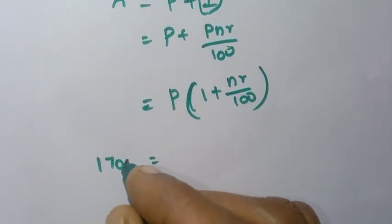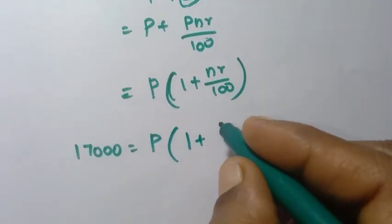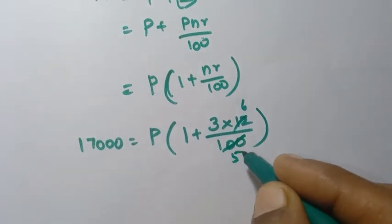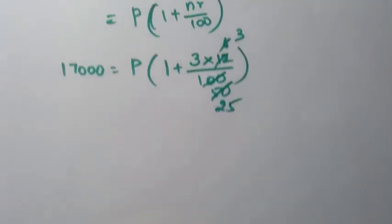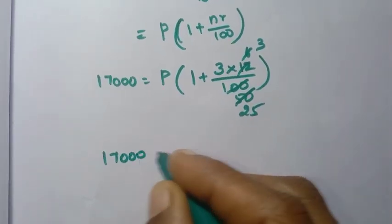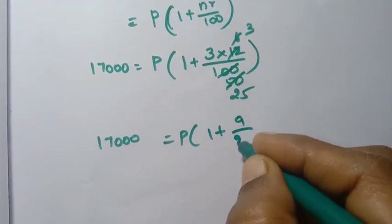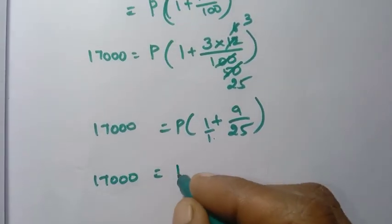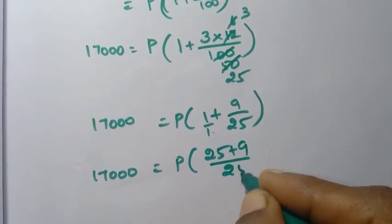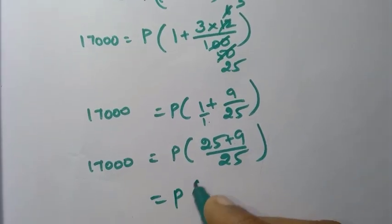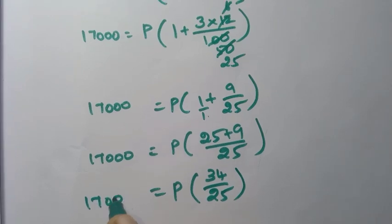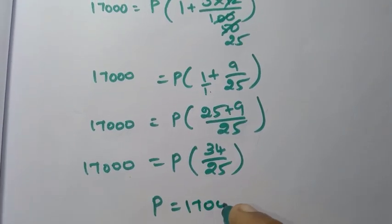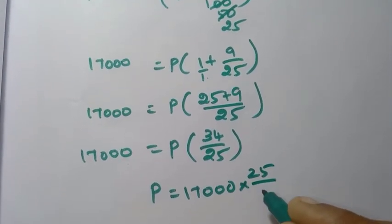So 17,000 = P into 25 plus 9 by 25 = P into 34 by 25. Therefore P = 17,000 into 25 by 34. Cancelling: 17,000 divided by 34 = 500, so P = 500 into 25.